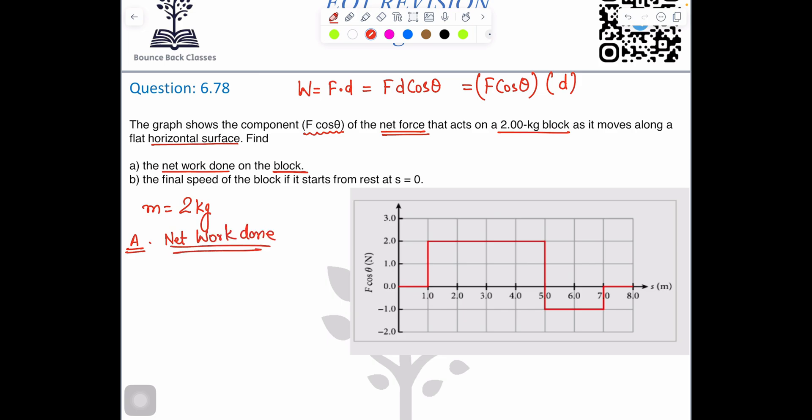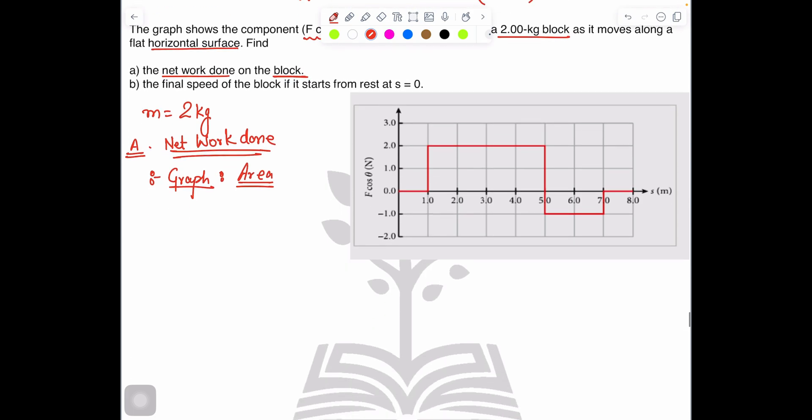So part A we are looking for net work done. As per the graph, I told you area under the graph. Just see here, we have first this line. Is there any area? Separate your question: 0 to 1, straight line. Is there any area covered? It is a linear, so it is 0.